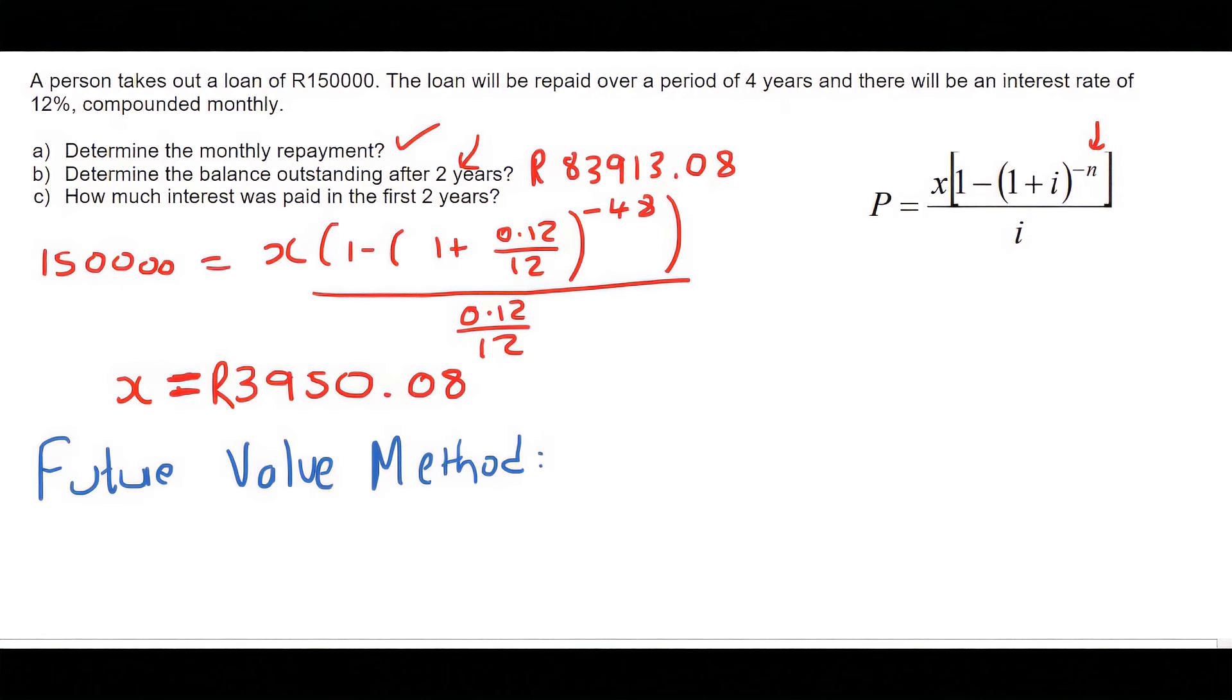The future value method requires two steps. Number one, you need to know how much does the loan become. And you do that using the A equals to P formula from grade 11. Actually, we don't want a bracket in the front there.